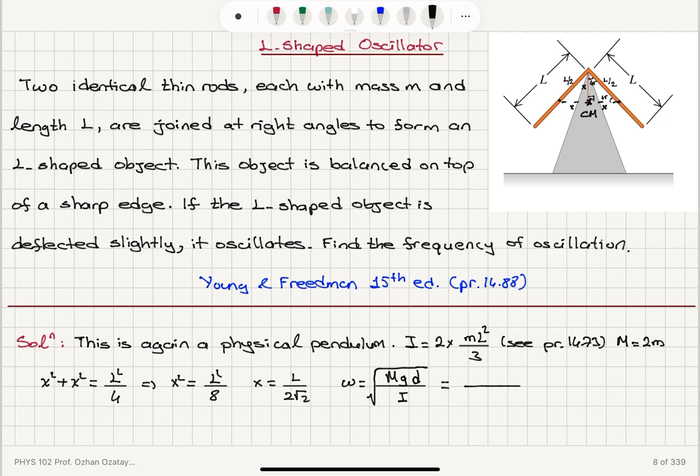...gravitational acceleration G, for D I substitute L divided by 2 square root 2. And for moment of inertia, I substitute 2m L squared divided by 3.